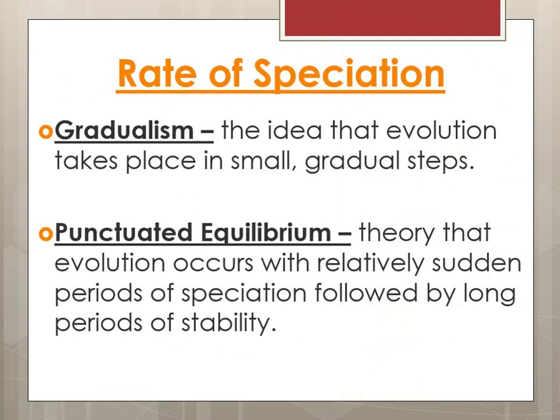How fast does speciation actually occur? The most accepted idea is gradualism — the idea that evolution takes place in small, gradual steps. But others believe it is more a situation of punctuated equilibrium: the theory that evolution occurs relatively suddenly and is then followed by long periods of stability, where a burst of evolution happens and then stops for a long period. Personally, I lean toward gradualism — I think it's always occurring — but I can see the point made by punctuated equilibrium. That said, this is contested by scientists and more evidence is always needed.